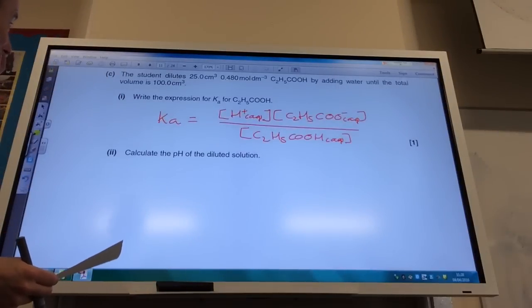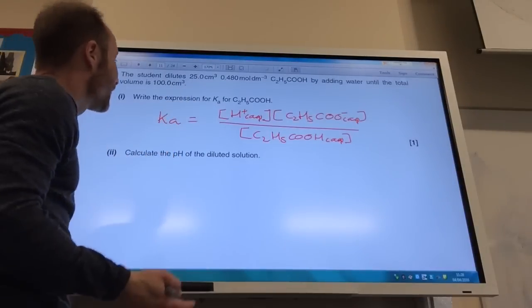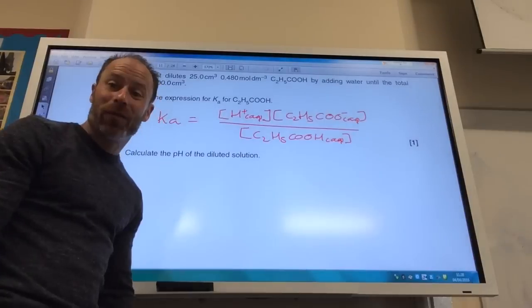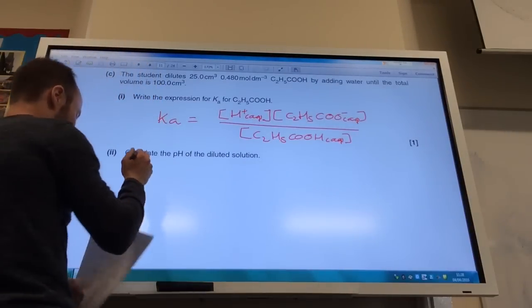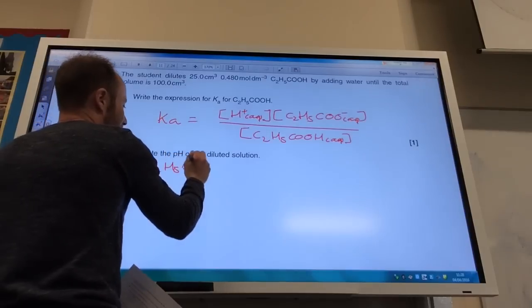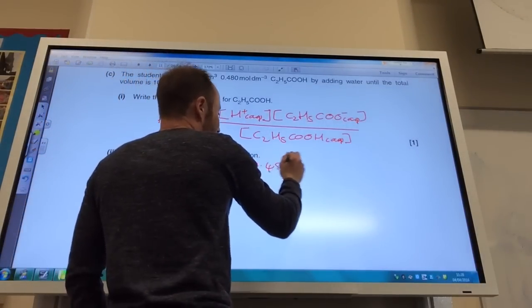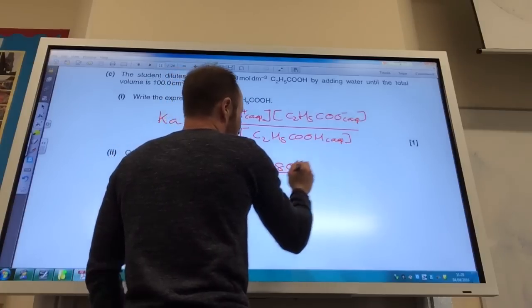Calculate the pH of diluted solution. So initially my concentration was 0.48, but I've diluted it by a factor of 4. So my new concentration of C2H5COOH is going to equal 0.480 divided by 4.